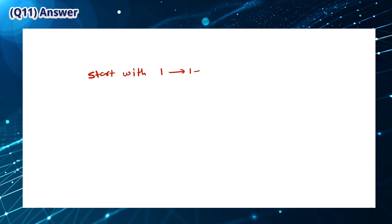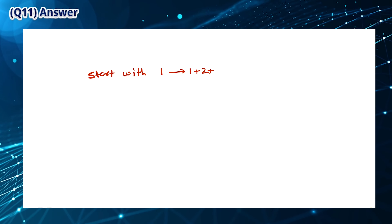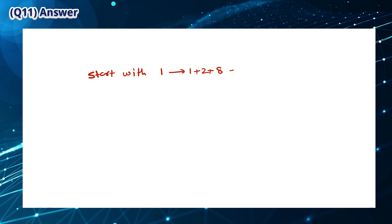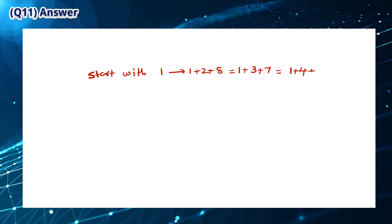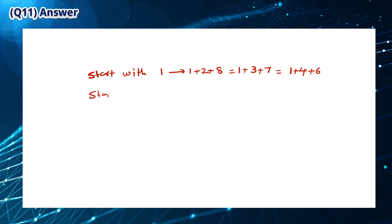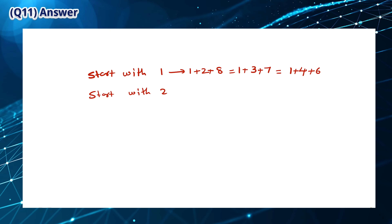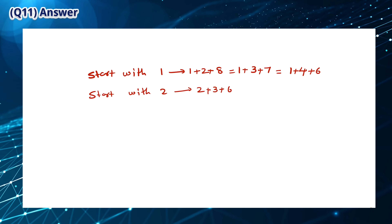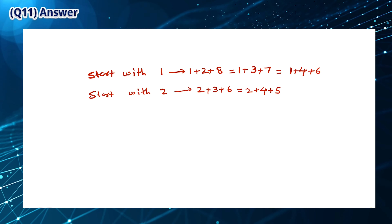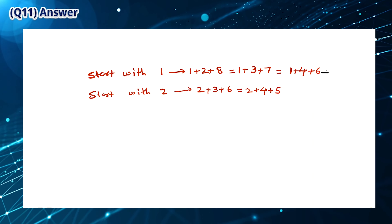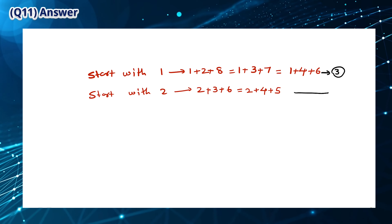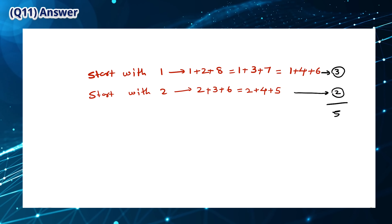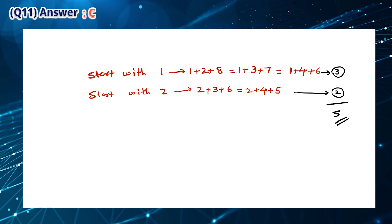If the first number is 1, the possibilities are 1+2+8, 1+3+7, and 1+4+6. If you start with 2, the possibilities are 2+3+6 and 2+4+5. Altogether, there are 3 plus 2, which is 5 possibilities. This means that the answer is C.